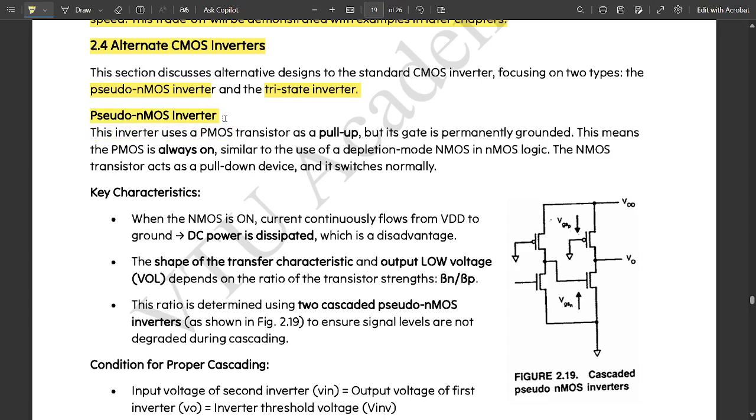First is pseudo-nMOS inverter. Those who have not watched the previous videos I have covered till now, please go and watch them in the playlist. This inverter uses a PMOS transistor as a pull-up, but its gate is permanently grounded. This is one key function you need to remember carefully—the gate is grounded permanently.